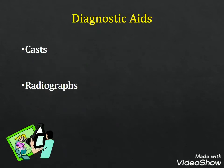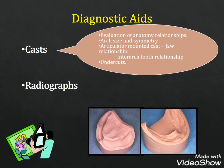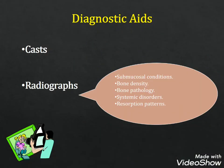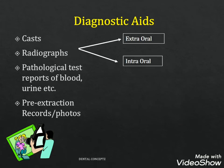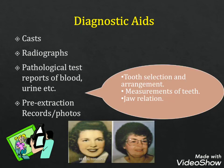Diagnostic aids include casts, which are used for evaluation of anatomical relationships, arch size and symmetry. Articulator-mounted casts are used for jaw relationship, inter-tooth relationship and detection of undercuts. Radiographs are used for detection of submucosal conditions, bone density, bone pathology, systemic disorders and resorption patterns — and may be extraoral or intraoral. Pathological tests such as blood and urine reports are used for systemic disorders. Pre-extraction photographs or records are used for tooth selection, arrangement, measurements of teeth and jaw relations.